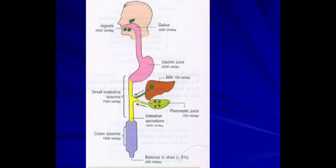We can see how the digestive juices contribute to fluid volume: 2 liters of water are ingested; saliva contributes 1500 ml; gastric juice 2.5 liters; bile 700 ml; pancreatic juice 750 ml; and intestinal secretions 1.5 liters. Of this, 7.5 liters is absorbed in the small intestine and 1.3 liters in the colon, leaving around 200 ml lost in stools per day.